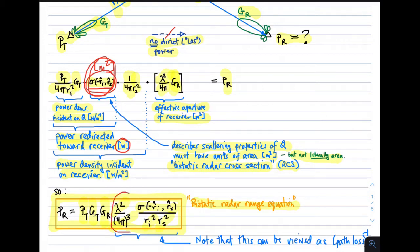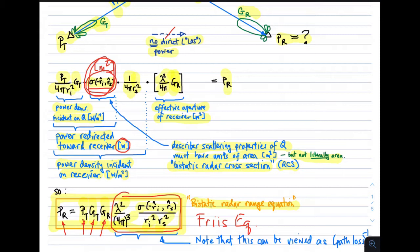This part can be interpreted as a path gain, or inverse path loss. In other words, this looks like a Friis equation, familiar from analysis of communication systems. The Friis equation says that received power equals transmit power times transmit directivity times received directivity times path gain. So here, this factor is evidently the path gain in the scenario where we are scattering from Q — a modified version of the Friis equation.